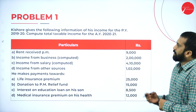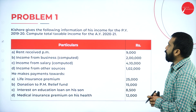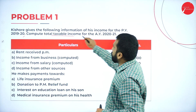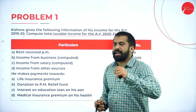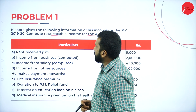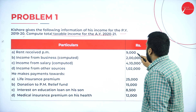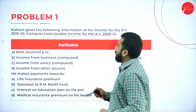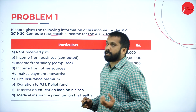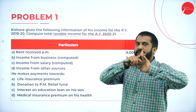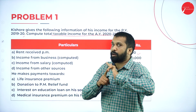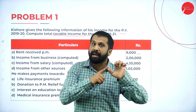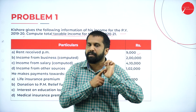Problem number 1: Kishok gives the following information of his income for the previous year 2019-20. Compute total taxable income for the assessment year 2020-21. In this, rent received per month is 9,000. Income from rent received comes under one of the 5 heads: income from salary, income from house property, income from business or profession, income from capital gain, and income from other sources.